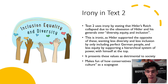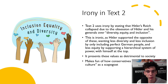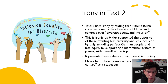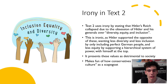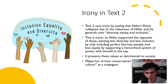Text 2 uses irony by stating that Hitler's Reich collapsed due to obsessions over diversity, equity and inclusion. This is ironic as Hitler supported the direct opposite of these values. This fictional Hitler's Reich is supposed to be the direct opposite of the real Hitler's Reich, so rather than being atrocious, it supports diversity, inclusion and equity. It does this to highlight the absurdity of people who oppose this new Hitler, such as conservatives who often attack people who support these values.